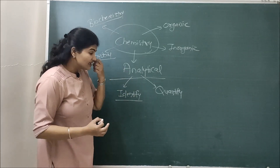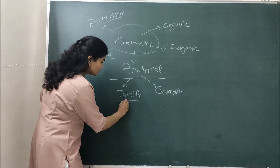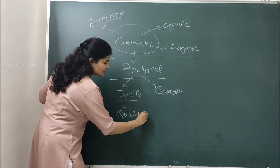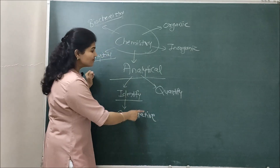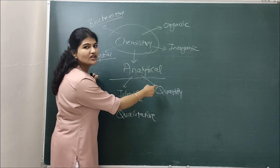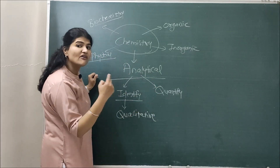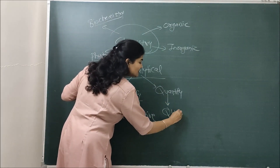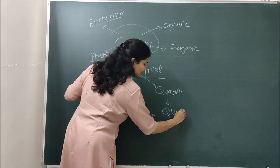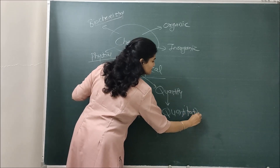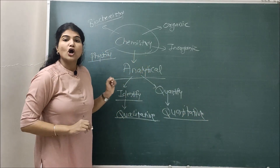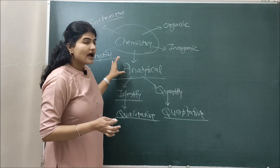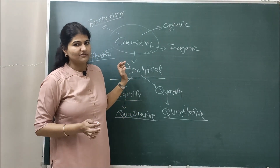If you are dealing with identification of components, it will be called qualitative analysis. And if you are dealing with quantification or estimation of the amount of components in the sample, you are dealing with quantitative methods of analysis. So basically, qualitative and quantitative methods of analysis are a part of analytical chemistry.